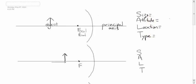Let's just jump right to it. How do you draw where the image is going to be and what it's going to look like? All you've got to remember is two things: parallel focal point, focal point parallel.